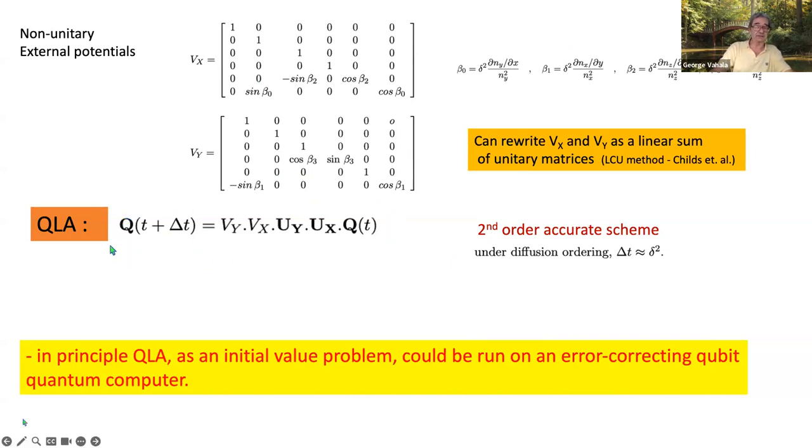So what you finish up with is basically a nice collide stream algorithm. And it is ideally parallelized, as we've seen, on classical supercomputers. And in principle, it'll run on an error-correcting quantum computer, but it needs quite a few qubits, obviously. So we have six qubits per spatial grid, and then the number of grid nodes. So that's a lot of qubits.